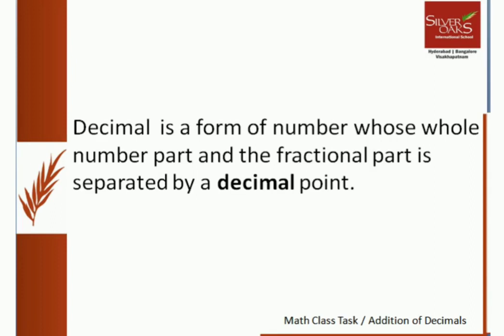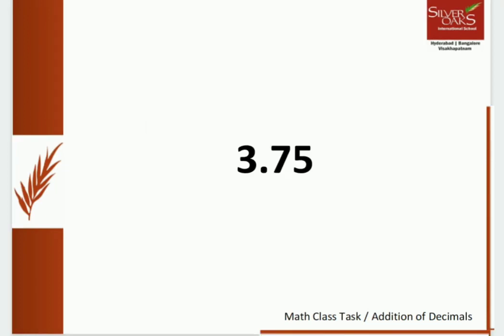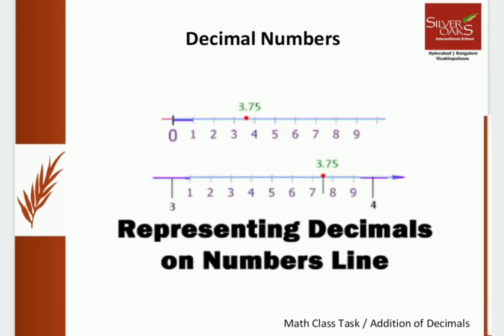Let us recall what decimals are. Decimal is one of the forms of representing numbers. It is a number or value between two whole numbers. For example, take the decimal number 3.75. The value of this number lies between the whole numbers 3 and 4. It is more than 3 but less than 4.